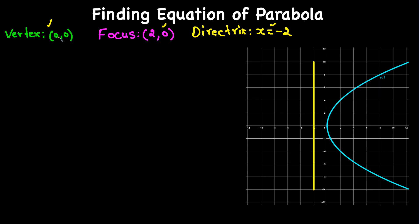As the vertex is (0, 0), it is at the origin. The focus is (2, 0), so x is 2 and y is 0. Now for the directrix, x = -2, so this vertical line is the directrix. We can also write it as x + 2 = 0.